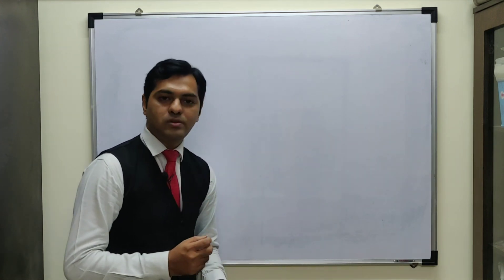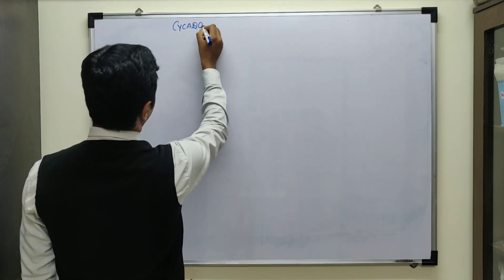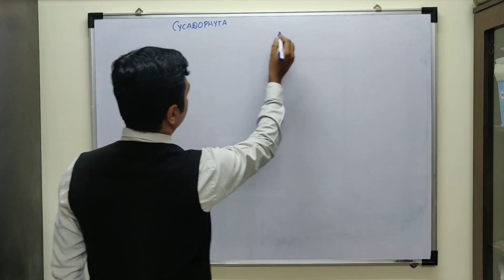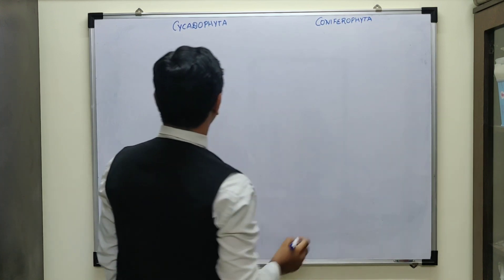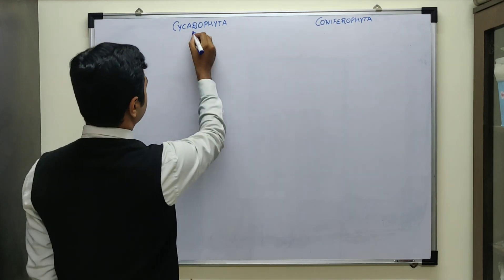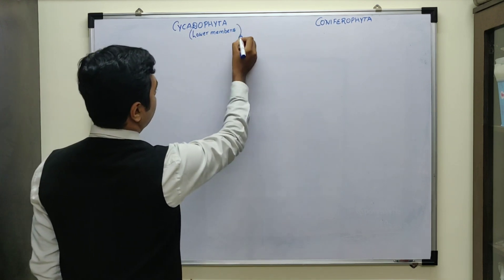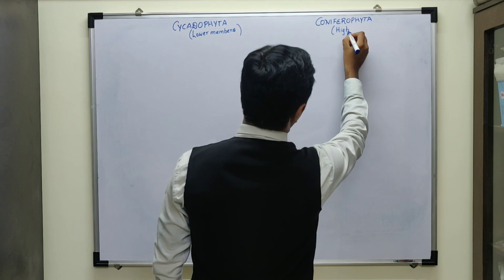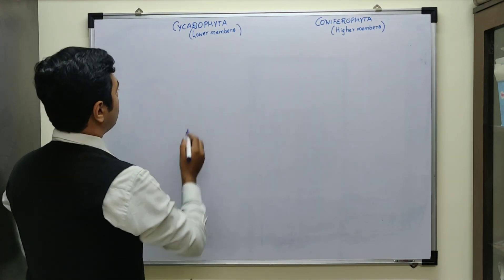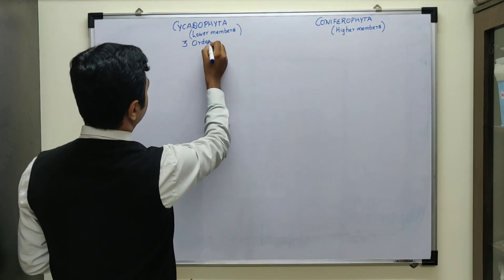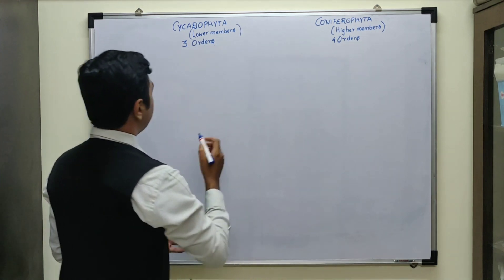Gymnospermae has specifically two groups: one is known as Cycadophyta and the other group is known as Coniferophyta. Cycadophyta are basically the lower members of Gymnospermae, whereas Coniferophyta are the higher members. In Cycadophyta we are going to discuss three different orders, whereas in Coniferophyta there are four orders to be discussed.